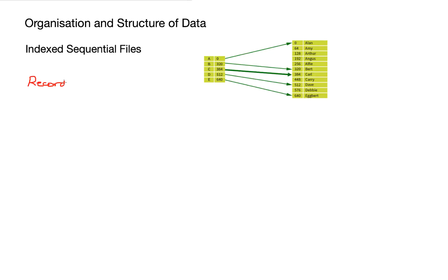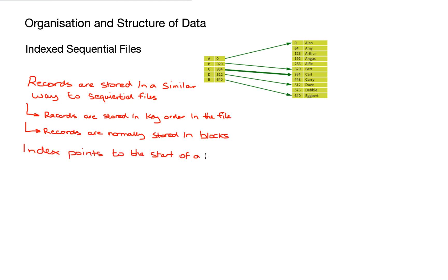So looking at our third file type, we've got index sequential files. Records here are stored in a similar way to sequential files with a key, however records are stored in order of that key in the file. The records themselves are normally stored in organized blocks, and the index points to the start of a particular group or block. And this means that it's faster to search.